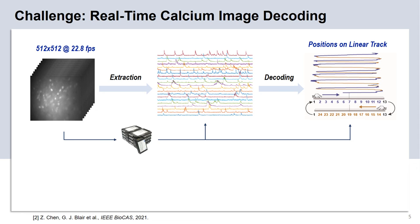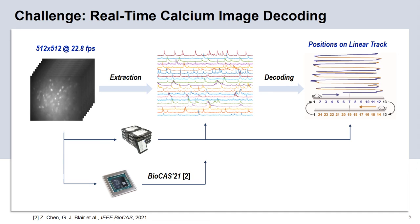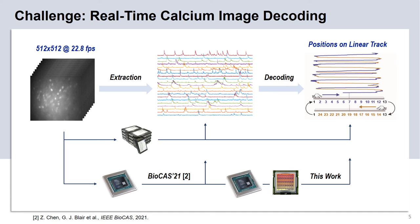However, the involved computation usually requires the calcium image data to be stored on disk, and the computation process is usually time consuming. So it is very hard to implement in real time for closed-loop feedback applications. In our previous work, we demonstrated that real-time calcium image preprocessing and trace extraction can be realized on a low-cost FPGA platform. In this presentation, I'll further introduce our work on implementing real-time calcium image decoding on the FPGA and neuromorphic devices, for enabling future closed-loop feedback applications.